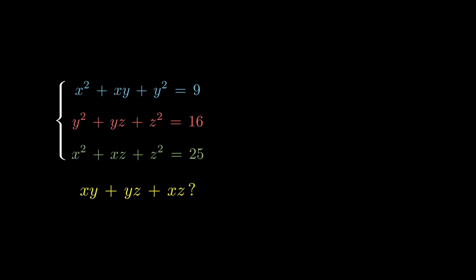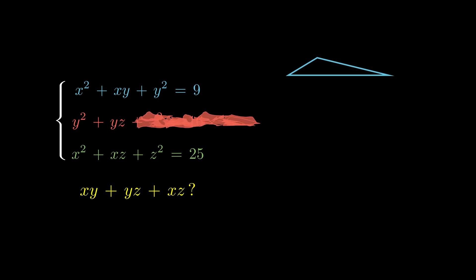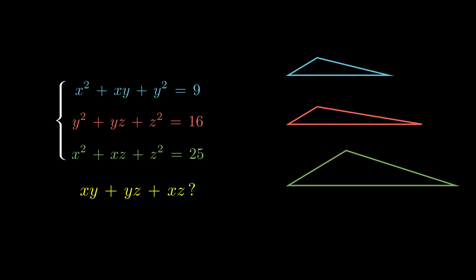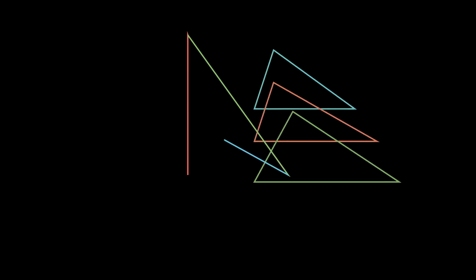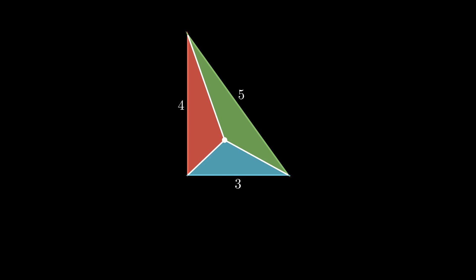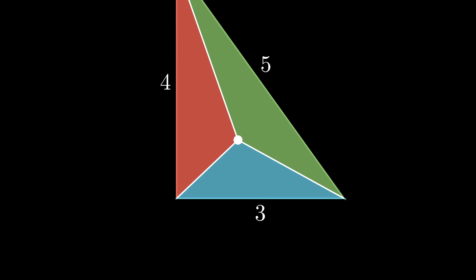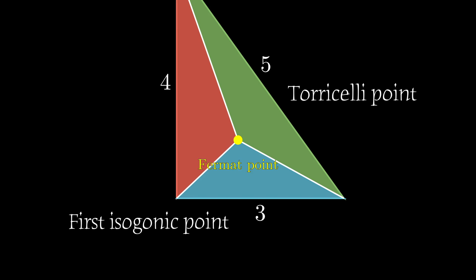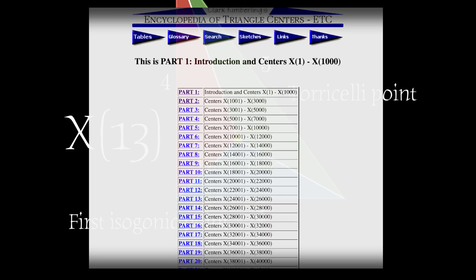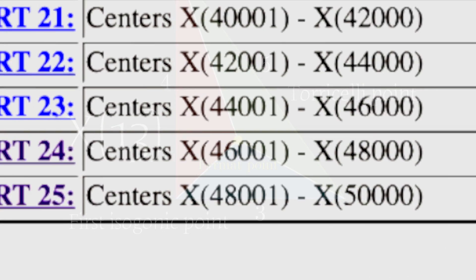The same thinking applies to the two other equations, giving us three triangles in total. All of them have a 120 degree angle inside, so if we put them next to each other, they produce a perfect circle, and our triangles arrange into one big triangle, which we will immediately recognize as right-angled. This point has a special name — the Fermat point, also known as the Torricelli point, or first isogonic point, or x13, because it is 13 out of 50,000 possible centers in a triangle.